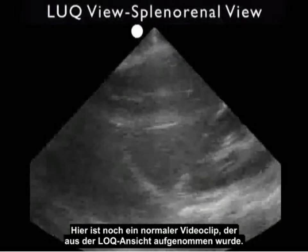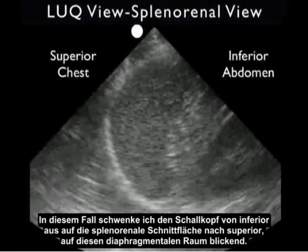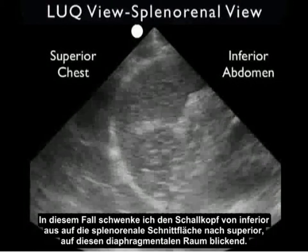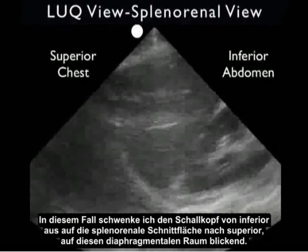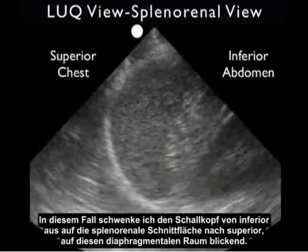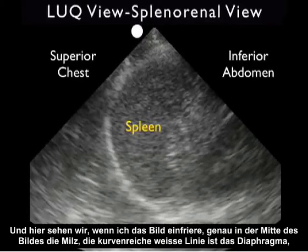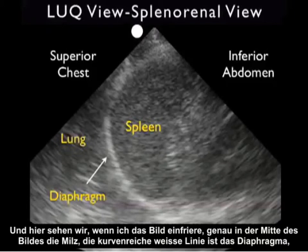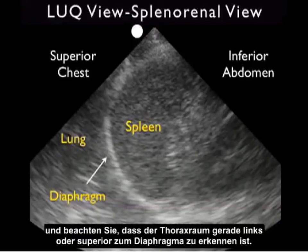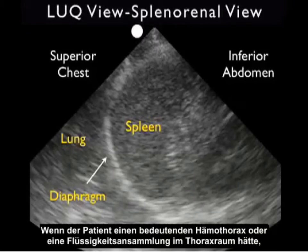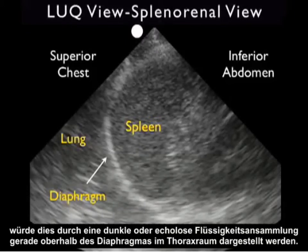Here's another normal video clip taken from the left upper quadrant. I'm swinging the probe from inferior — looking at the splenorenal interface — to superior, looking at that infradiaphragmatic space. We see the spleen in the middle of the image, the curving white line making up the diaphragm, and the thoracic cavity just left or superior to the diaphragm. If the patient had a significant hemothorax, that would appear as a dark or anechoic fluid collection just above the diaphragm in the thoracic cavity.